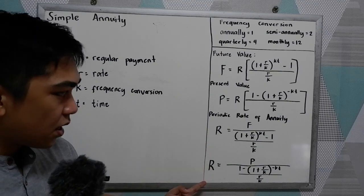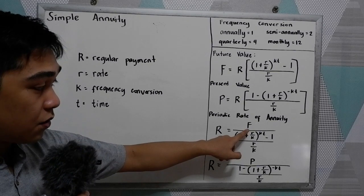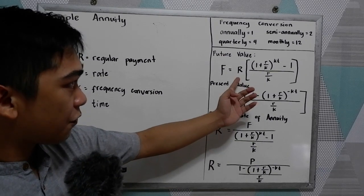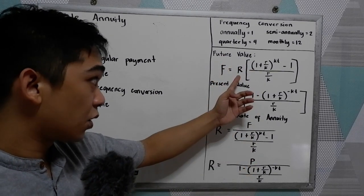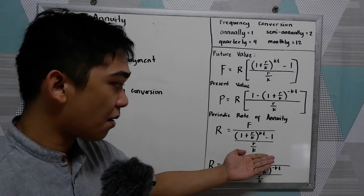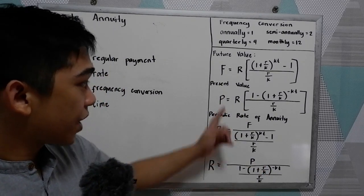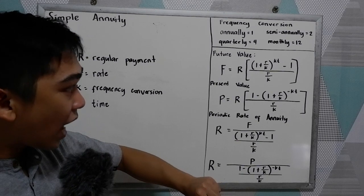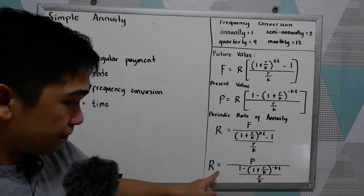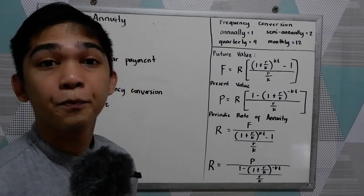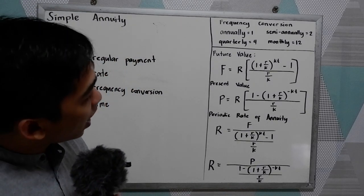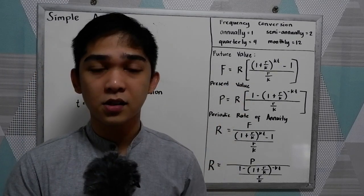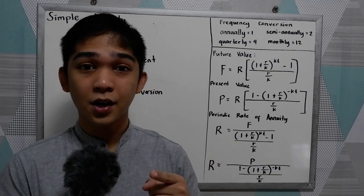We also have the periodic rate of annuity with two formulas. If the future value is given, we use the formula derived from the future value formula, solving for R. If the present value is given, we use a different derived formula to solve for R. We are going to have word problems using these different formulas, and of course in this lesson you need to have your calculator.